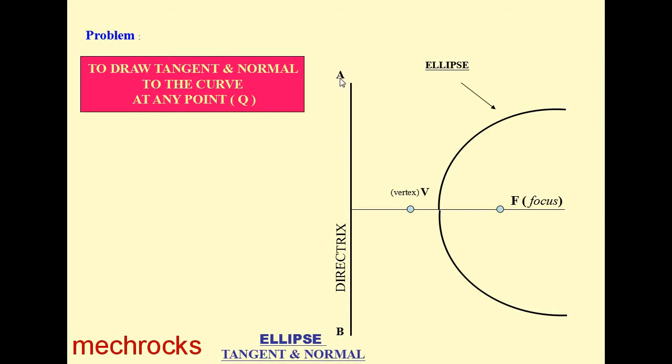This AB is called the directrix. And this line is called the axis. This point is called the focus, and this point is the vertex.